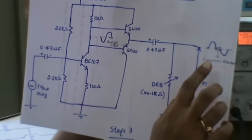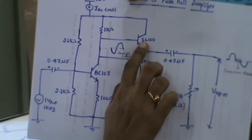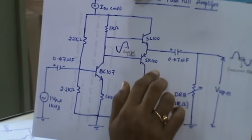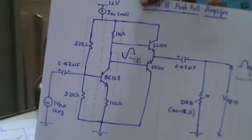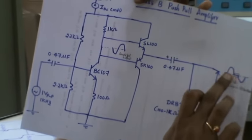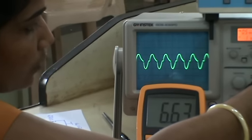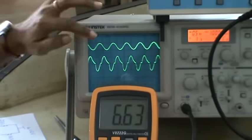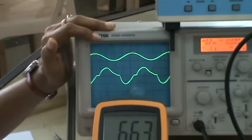Based on this we get the crossover distortion because SL100 conducts after plus 0.7 volts and SK100 conducts after minus 0.7 volts. So from plus 0.7 to minus 0.7, the transistor remains off, so there is no output. Here we can see the output. This gives the crossover distortion.